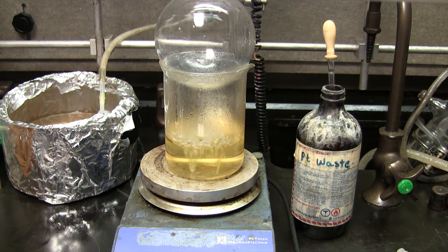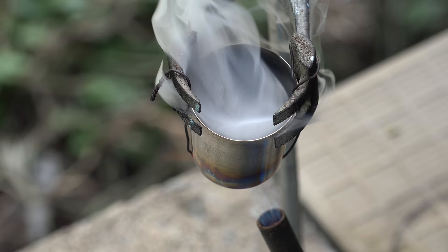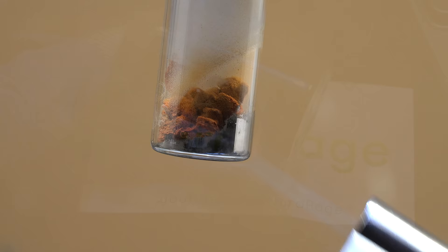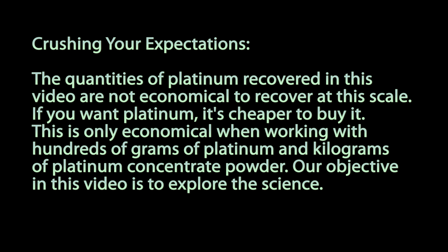Greetings fellow nerds. In a previous video, we processed liters of laboratory chemical waste from an organometallic research lab to produce a couple grams of platinum concentrate powder. In this video, we're going to try and extract that platinum. First, I need to crush your expectations. The quantities of platinum recovered in this video are not economical to recover at this scale. If you want platinum, it's cheaper to buy it. This is only economical when working with hundreds of grams of platinum and kilograms of platinum concentrate powder. Our objective in this video is to explore the science. I can't believe I still need to keep saying that after all these years.